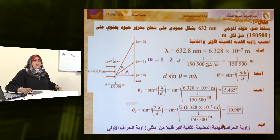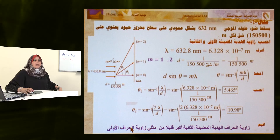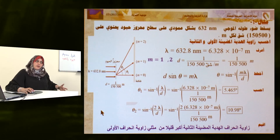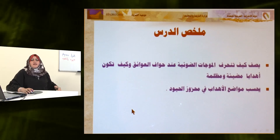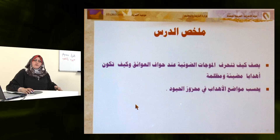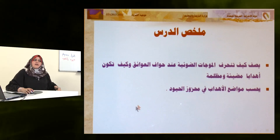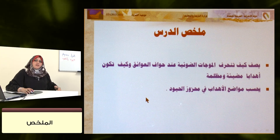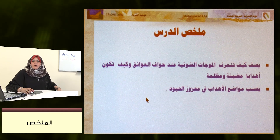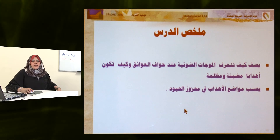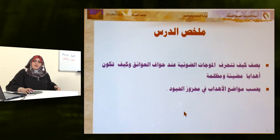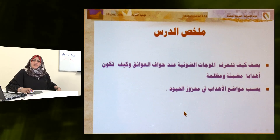نقيّم: زاوية انحراف الهدب المضيء الثاني أكبر قليلاً من ضعف زاوية انحراف الهدب المضيء الأول. في هذا الدرس تعرفنا على كيفية انحراف الموجات الضوئية عند حوافي العوائق، ودرسنا الانحراف عند الشق المفرد وتحليل الضوء الأبيض عند سقوطه على محزوز الحيود وحسبنا مواضع الأهداب. شكراً وأتمنى لكم دوام التوفيق والنجاح.